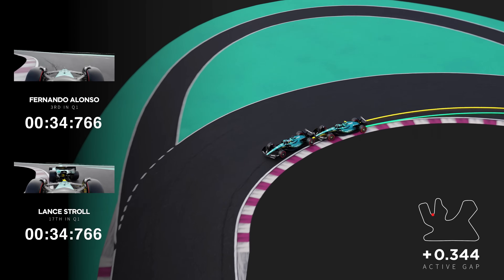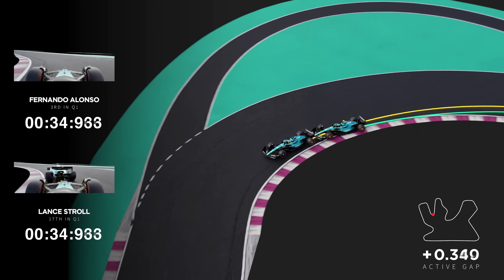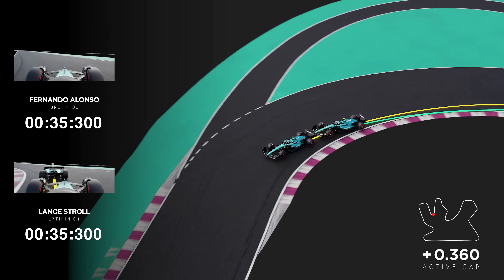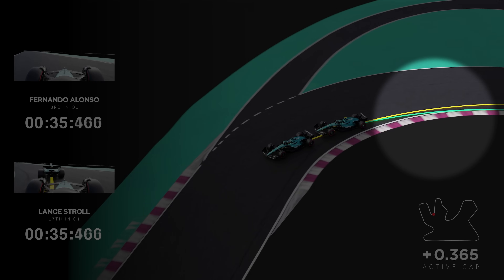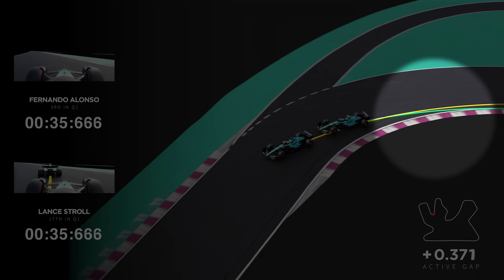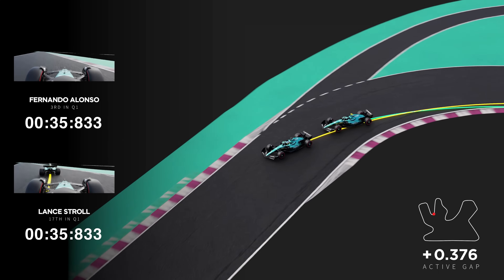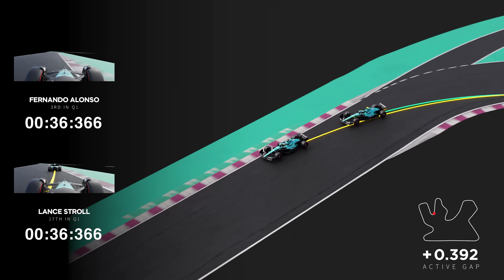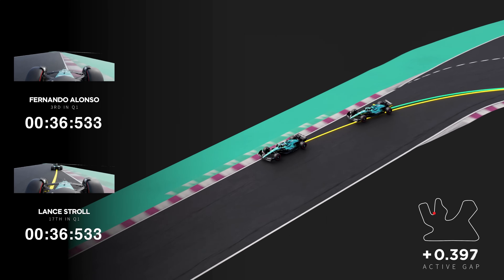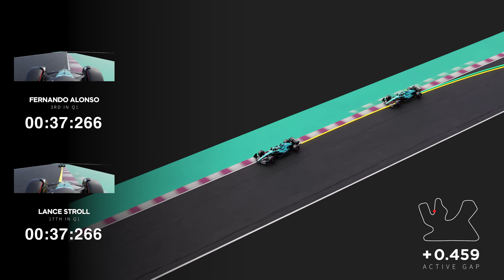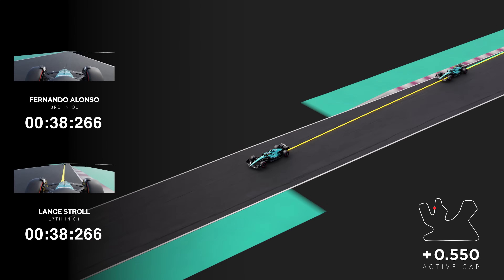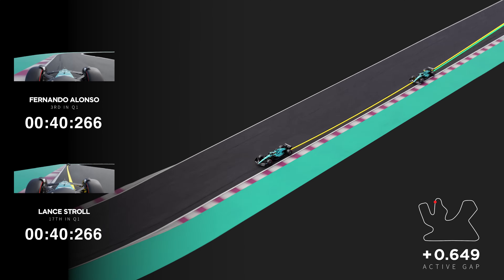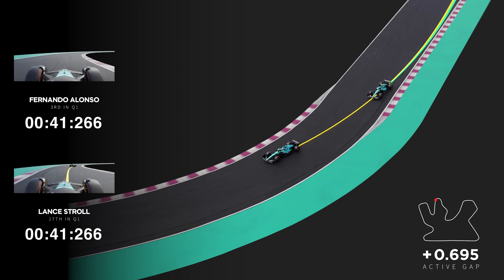Into turn six, we see two very different lines from both drivers. Lance Stroll loses the most time on this corner out of the whole lap. As we continue, the gap has grown to seven tenths.